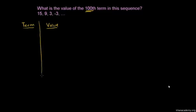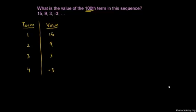Our first term is 15, our second term is 9, our third term is 3, and our fourth term is negative 3. I'm making sure we associate each value with the right term. And they want us to figure out what the hundredth term of this sequence is going to be. So let's see if we can discern some type of pattern.